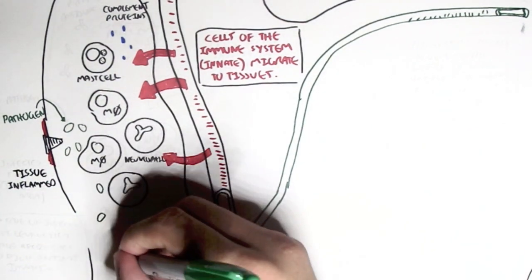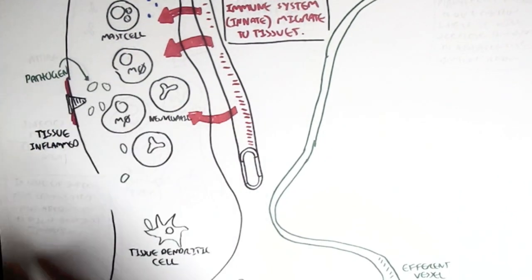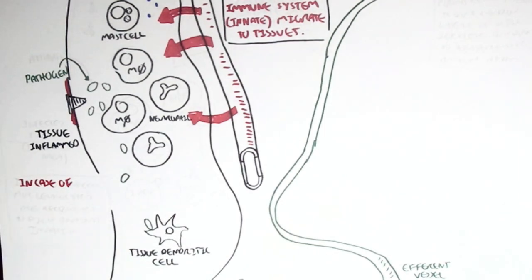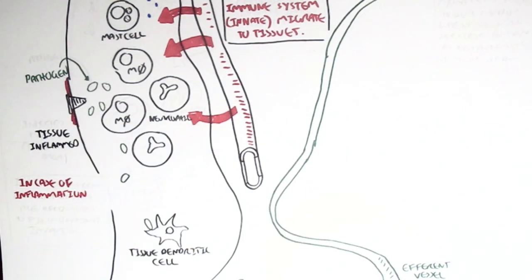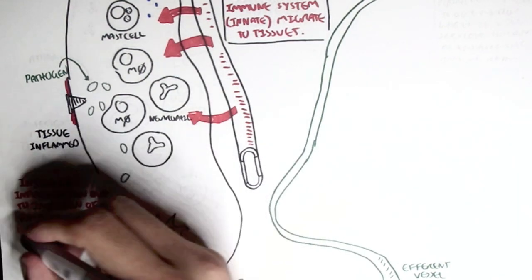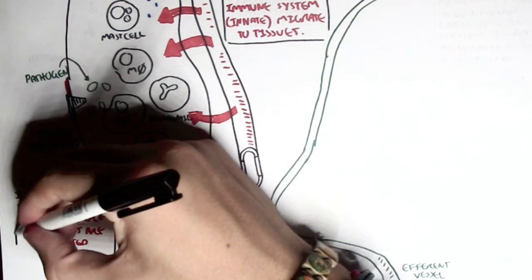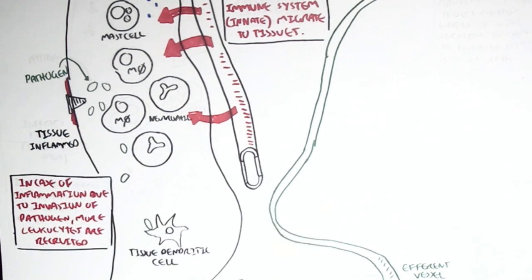So we have more leukocytes going into the infiltrated area. Typically neutrophils, because neutrophils are very fast-acting. So again, in case of inflammation, due to the invasion of the pathogen, more leukocytes are recruited into the damaged or infiltrated area.